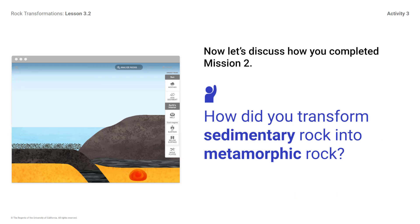Now, let's discuss how you completed Mission 2. How did you transform sedimentary rock into metamorphic rock? You might respond: Sedimentary rock subducted toward Earth's interior where it was exposed to energy from Earth's interior that could transform it into metamorphic rock.